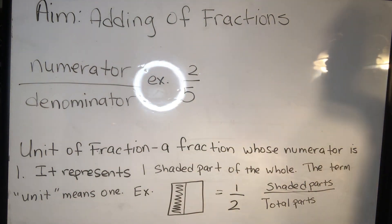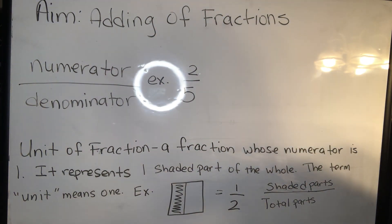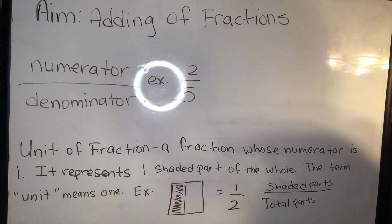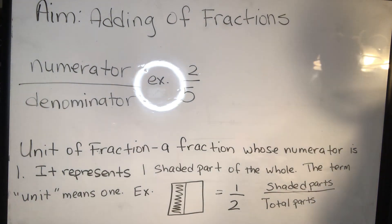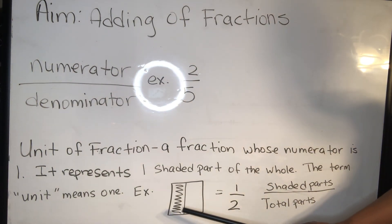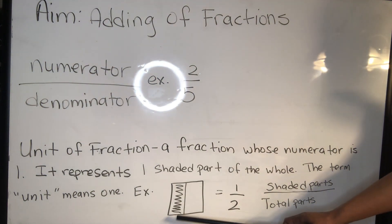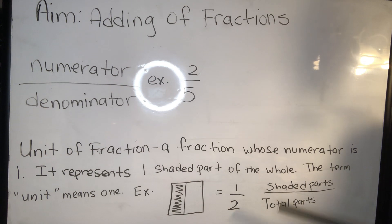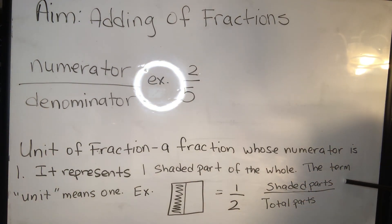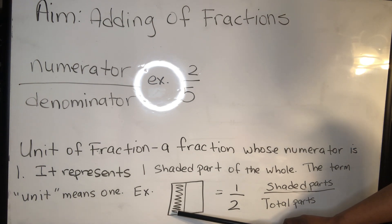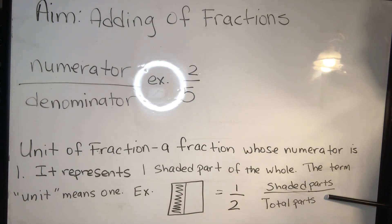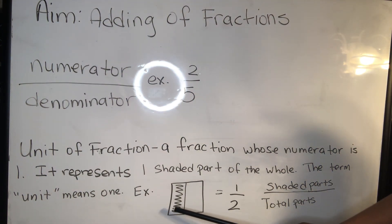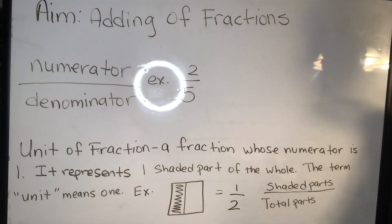Units of fraction — a fraction whose number is one. That's exactly what that means. It represents one shaded part of the whole. The term unit means one. And as you see for our example, we have two parts — one part here and one part there. We also have one part shaded and one part not. So our shaded part is our numerator, which is our top number, and the bottom denominator is where our total parts are. We have a total of two parts, so this is how we get a two for our denominator.